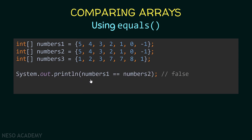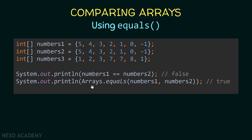Let's see how we can compare these arrays. I'm printing numbers one is equal to numbers two using the comparison operator ==. This will display false, because we are comparing the address inside numbers one with the address inside numbers two, and the address of this array is different than the address of the other array. So in order to compare the elements of the arrays, we will use the equals method. I'm using the Arrays class and calling the equals method, passing numbers one and numbers two. This method is going to compare the elements of numbers one with the elements of numbers two, and if the elements at the same index are equal it will return true, and if at least one element is not equal it will return false.